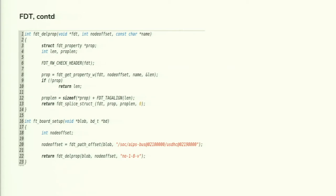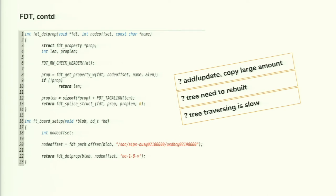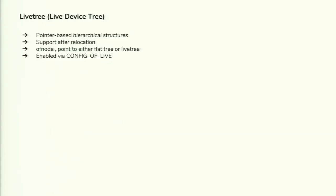We have an FDT library where you can manipulate the device tree — similar to Linux: fdt_get_property, fdt_set_property, etc. The problem is that if you want to update a device tree property (for example, enabling a TX pin from 0 to 1), you need to traverse the entire device tree from the root node down to the target node. This is slow, so we introduced the concept of a live tree, where you can directly jump to the particular node's address, reducing traversal overhead.